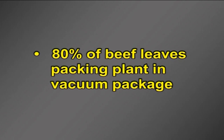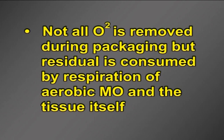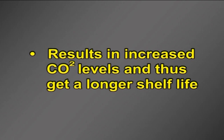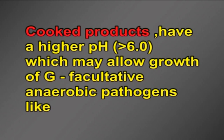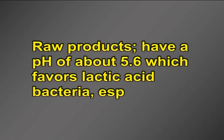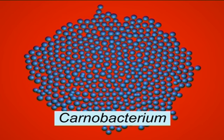Vacuum packaged meats: 80% of beef leaves the packing plant in vacuum packaging. Not all oxygen is removed during packaging, but residual oxygen is consumed by respiration of aerobic microorganisms and the tissue itself, resulting in increased carbon dioxide levels and thus a longer shelf life. If nitrites have been added to the vacuum packaged meat — for example to inhibit Clostridium botulinum in hams and bacon — the lactic acid bacilli domination is even more pronounced. Cooked products have a higher pH of 6, which may allow growth of gram-facultative anaerobic pathogens like Yersinia enterocolitica. Raw products have a pH of about 5.6, which favors lactic acid bacteria, especially Lactobacillus, Carnobacterium and Leuconostoc.